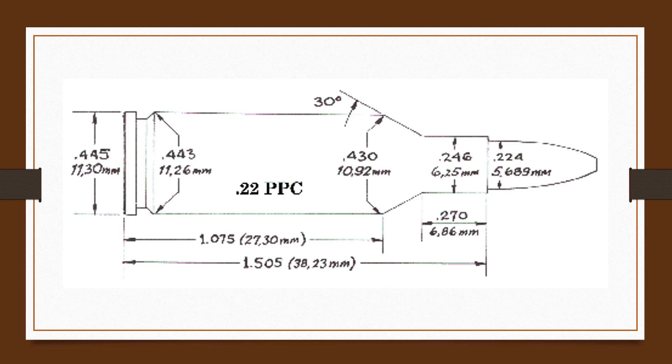Although the .22 PPC is a short, rather stubby case only 1.51 inches long, it nevertheless develops ballistics superior to some larger, longer cartridges such as the .222 and .223 Remington. The 52 grain bullet can be pushed out of the muzzle at 3,500 feet per second.